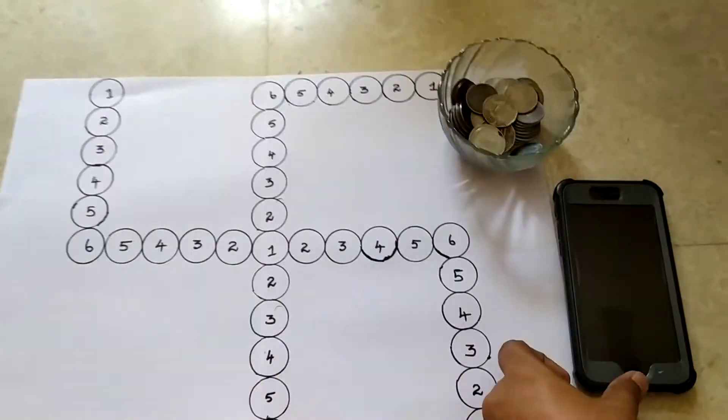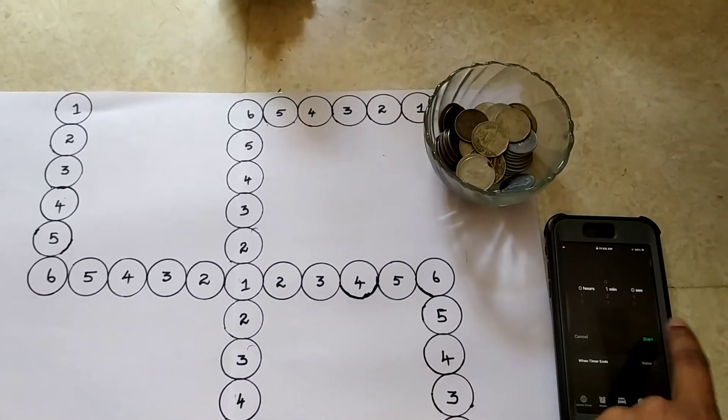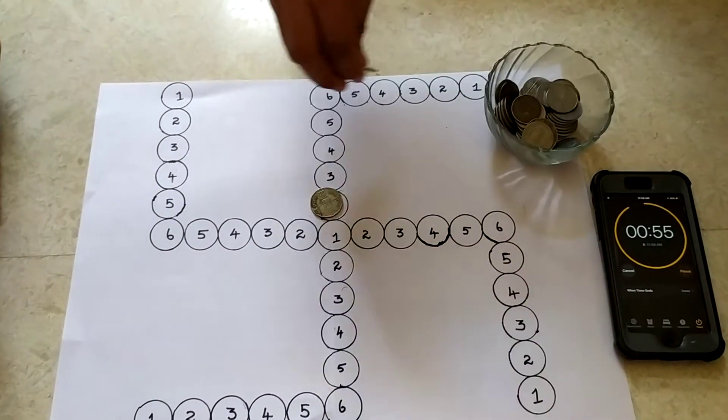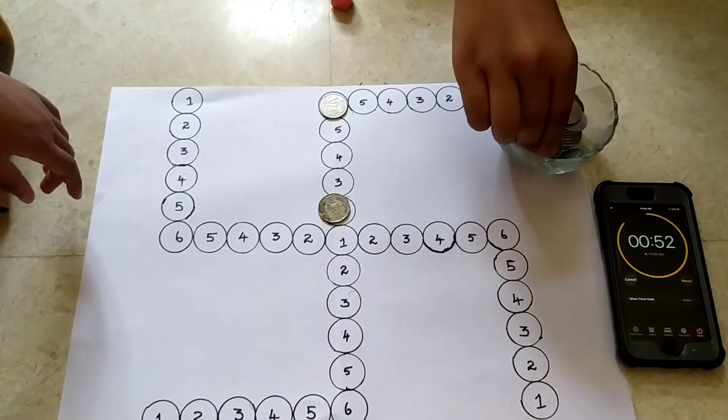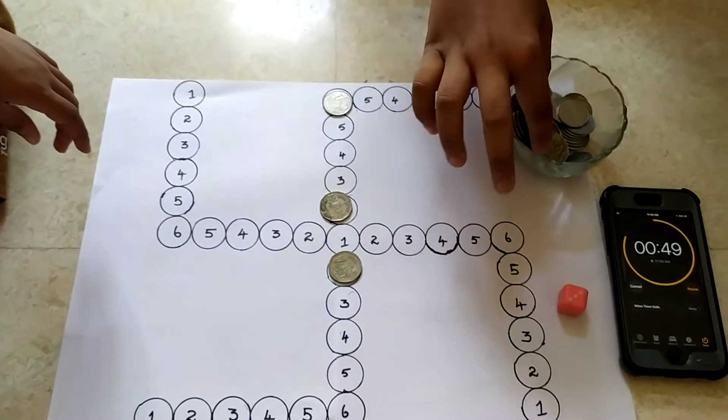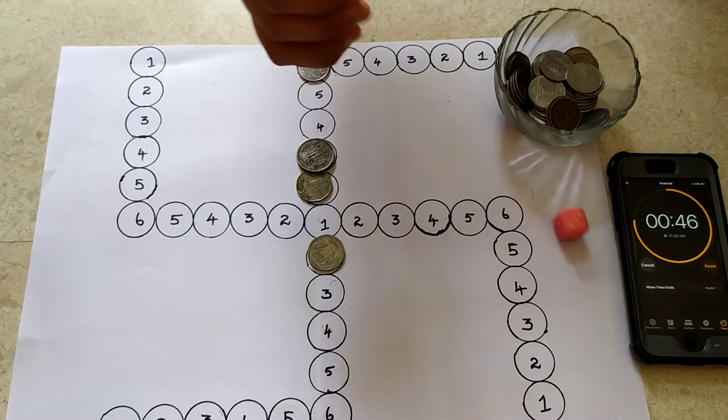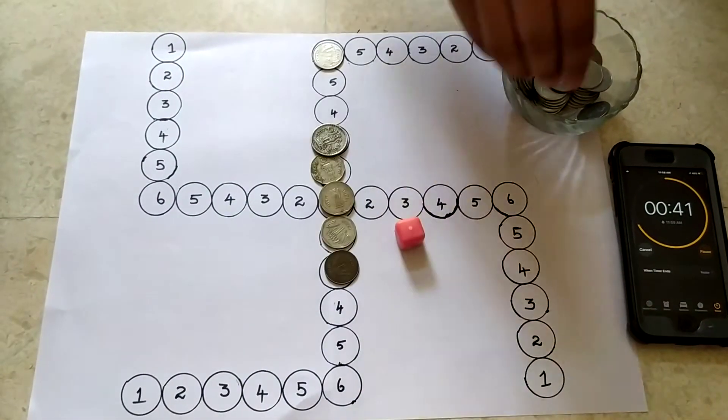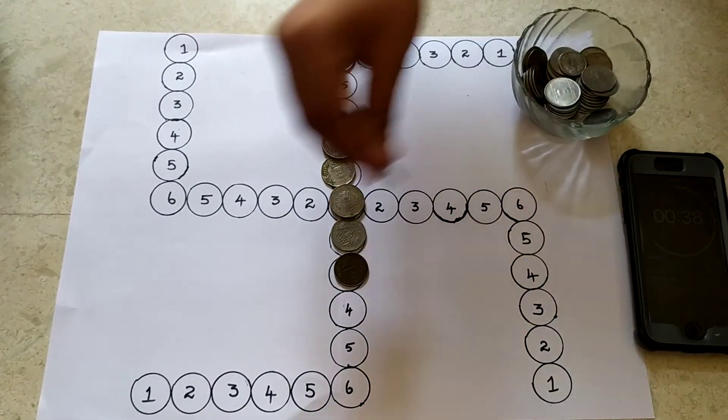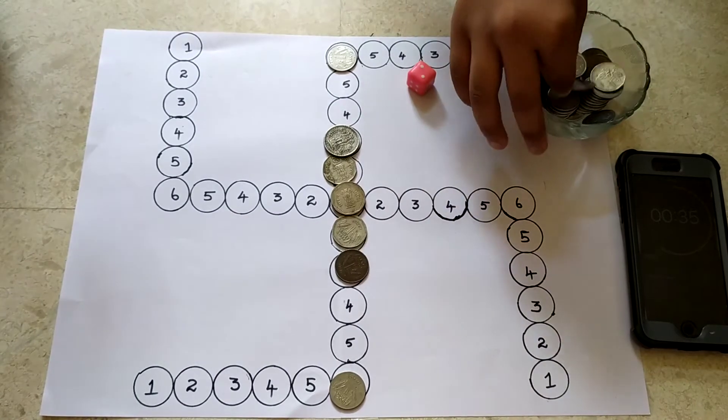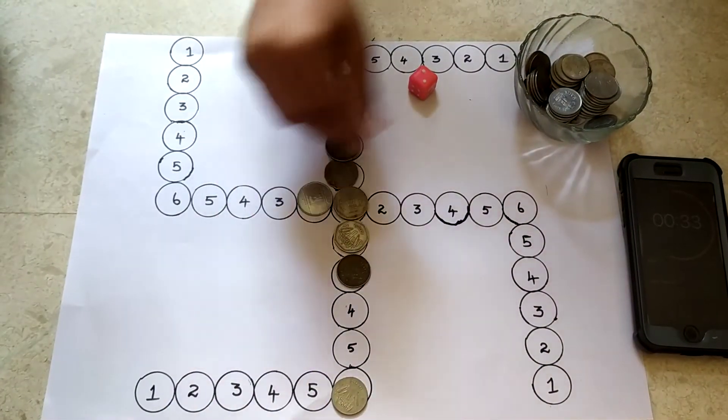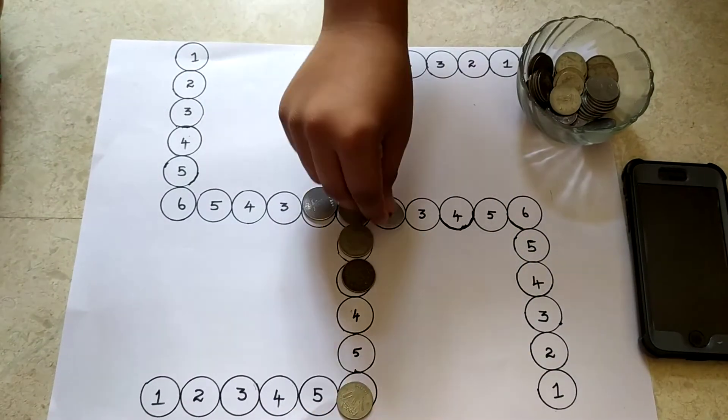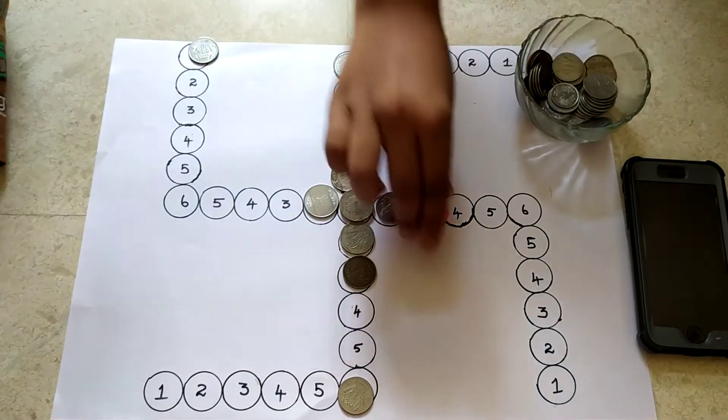Can we switch on the timer? Ashwand. Start. Can you roll it here?